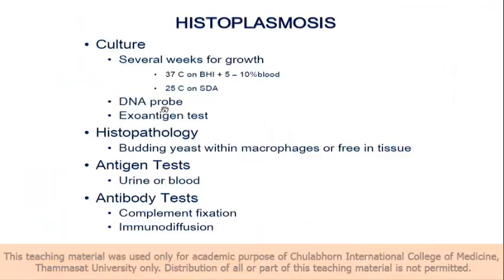Culture is the standard. We need to incubate at both temperatures, but at 25°C it is easier to get the culture than at 37°C. DNA probe is not used much. For the exoantigen test, histoplasma and talaromyces are quite dangerous organisms. We need biosafety level 3 in the U.S., but in Thailand, not all universities have that, so we use biosafety level 2+.